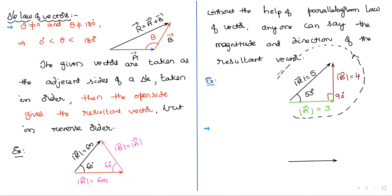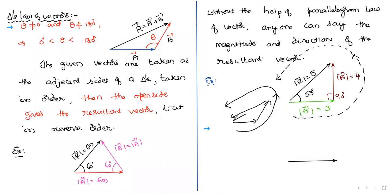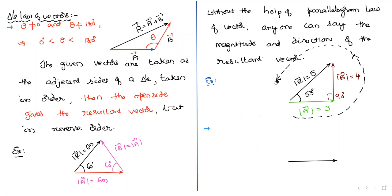Means in anti-clockwise direction — the resultant is taken in anti-clockwise. But the resultant dotted one is in clockwise direction, which is opposite to this order. That's why I said it is taken in opposite order — reverse order.